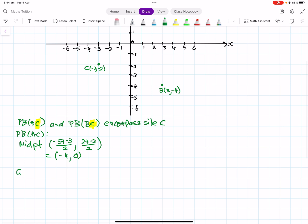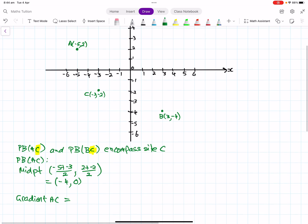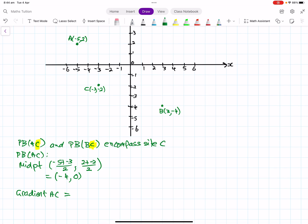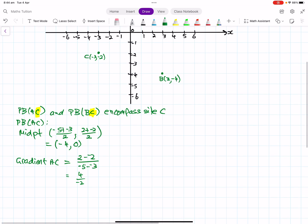And the other thing we need is the gradient of the line and then therefore the perpendicular. So the gradient of AC, first of all, rise over run, will give us 2 take away negative 2 over negative 5 take away negative 3, which is 4 over negative 2, which is negative 2 over 1. Now that means that the gradient of the perpendicular of AC will be, flip that upside down and change its sign, will be 1 half.